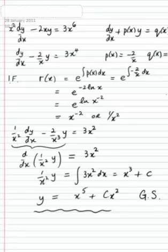Don't forget to include the constant of integration at this last stage here, because if you don't include it, you'll lose this cx squared term here, and you won't have the general solution. That's the problem solved.